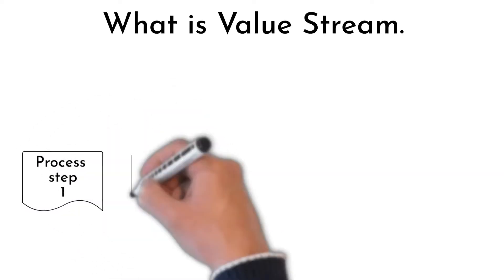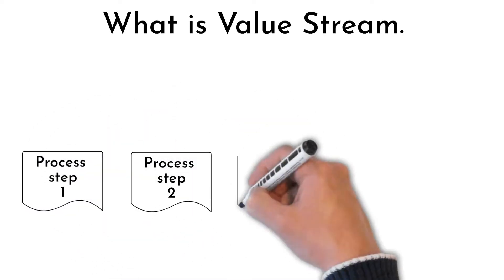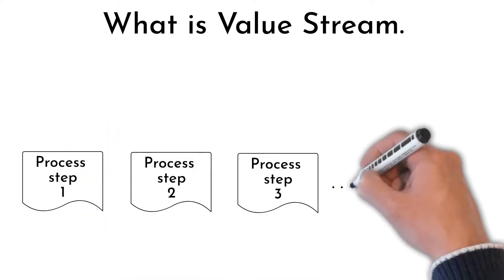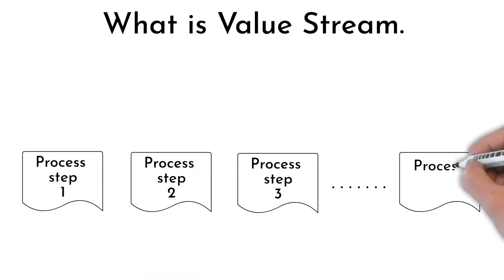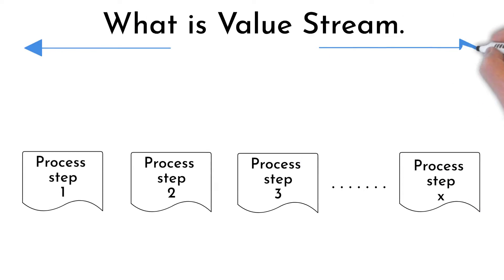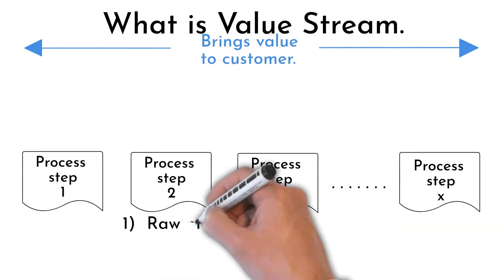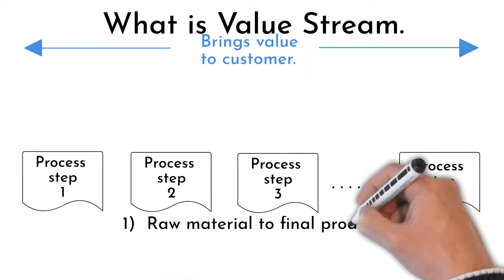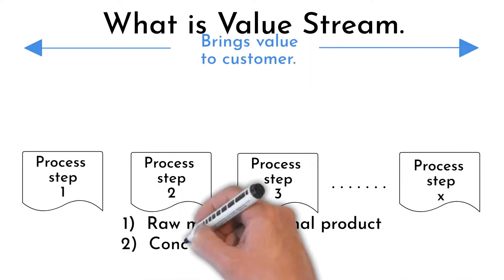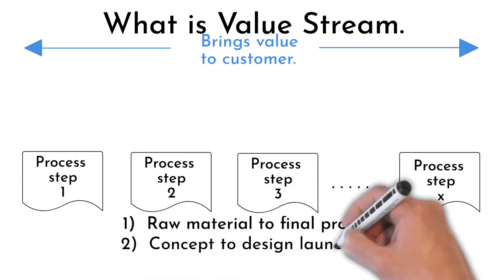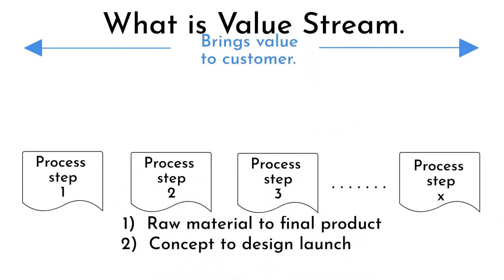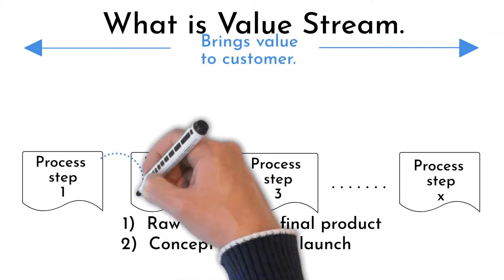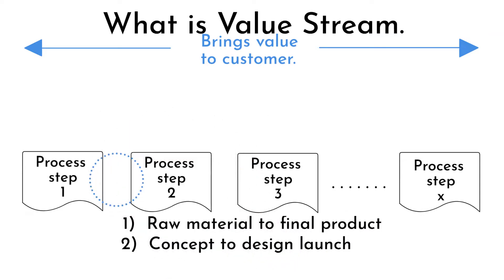Hello and welcome to Six Sigma Mania. Value Stream is all actions required to bring a product through all needed processes — from raw material to customer in the case of products, and from concept to launch in the case of design.